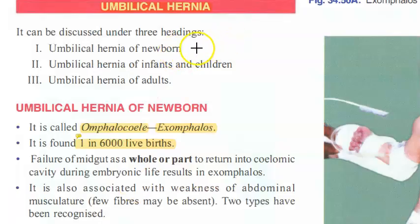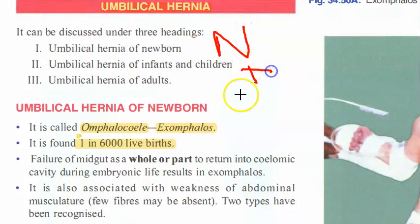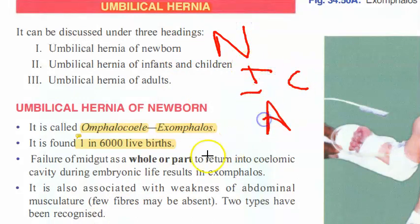Umbilical hernia is divided into three categories: newborn umbilical hernia, infants and children, and adults.